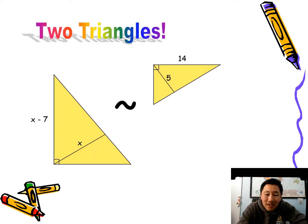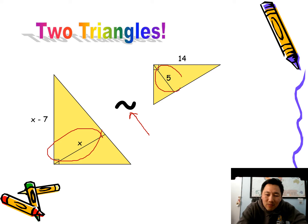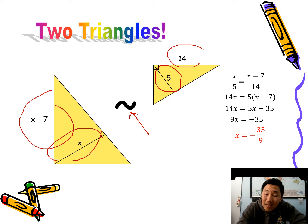Last one for the day. There's two triangles, and this symbol in the middle of them says they're similar. So we can set up the proportion the same way. We can do the X and then match it up with the 5, and then the X minus 7 match it up with the 14. There it is: cross multiply and solve it out. You should get X equals negative 35 over 9.